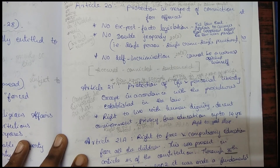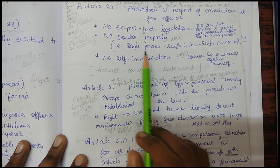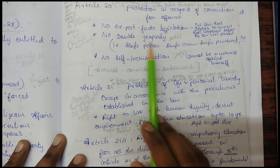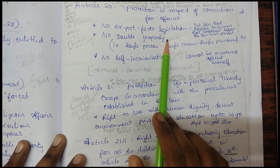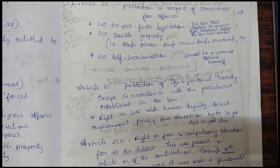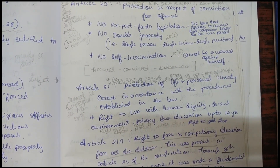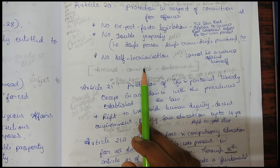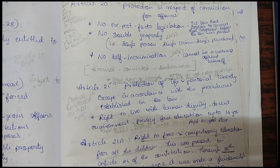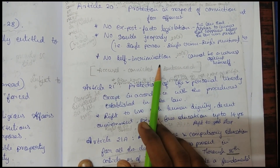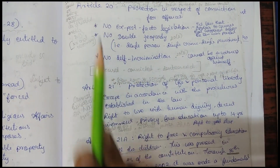Article 20 also provides for no double jeopardy — for a single crime, only a single punishment can be given; double punishment is not permitted. The third provision is no self-incrimination: if a person commits a crime, they cannot be compelled to be a witness against themselves. No one can force a person to be a witness against themselves.